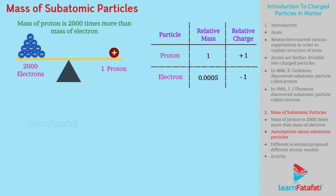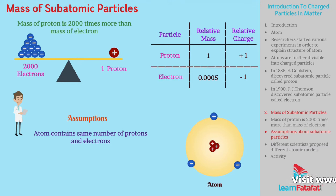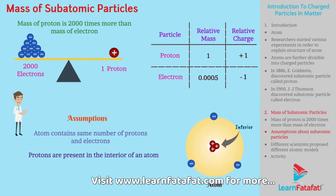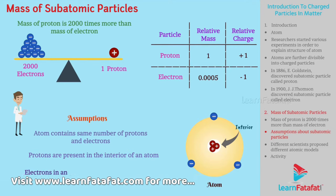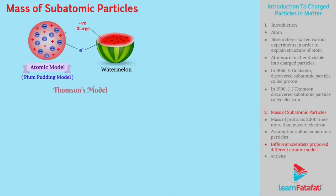After discovery of subatomic particles, researchers came up with assumptions: that an atom contains the same number of protons and electrons, that protons are present in the interior of the atom, and that electrons can be removed from the atom. Different scientists then proposed different atomic models.